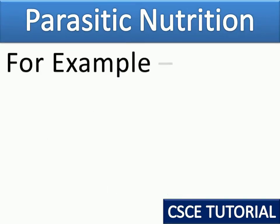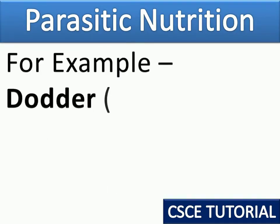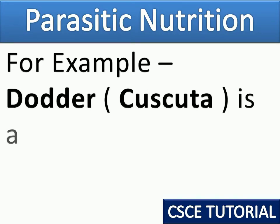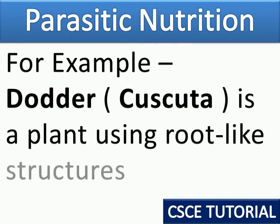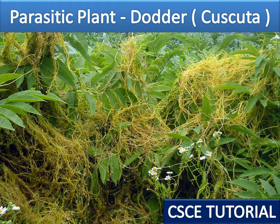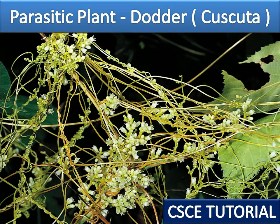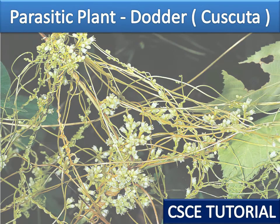For example, Dodder or Cuscuta is a parasitic plant that uses root-like structures to attach to its host. Its plant is yellowish in color because it does not have chlorophyll, so it cannot make its own food. It obtains its nutrition from the plant on which it grows.